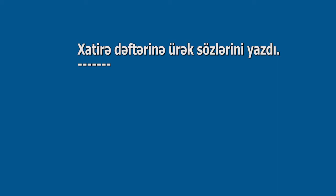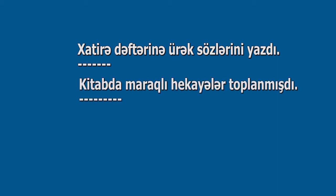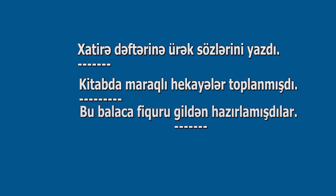Vasitəli tamamlıq yönlük, yerlük, çıxışlıq hallarda olub, kimə, nəyə, kimdə, nədə, nədən suallarından birinə cavab verir. Nümunələr: Xatirə dəftərinə ürək sözlərini yazdı. Kitabda maraqlı hekayələr toplanmışdı. Bu balaca figuru gildən hazırlamışdılar. Tamamlıqlar əsasən isim və əvəzliklərlə ifadə olunur.